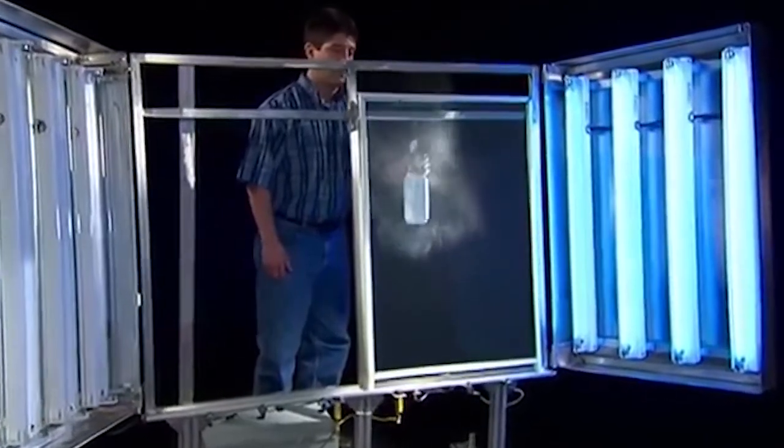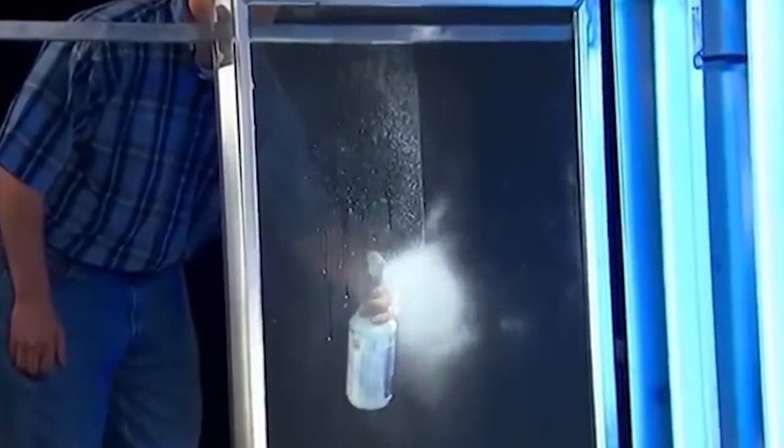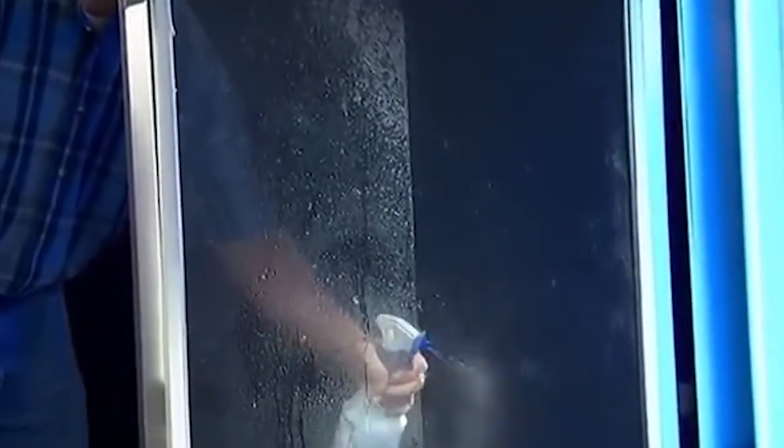This demonstration illustrates the sheeting action of Plus EasyClean. On the left uncoated side, water beads up as it hits the glass. But on the right side, coated with Plus EasyClean, the water slides or sheets off.